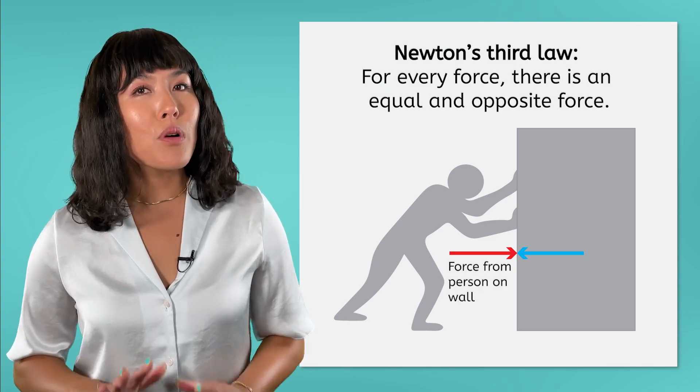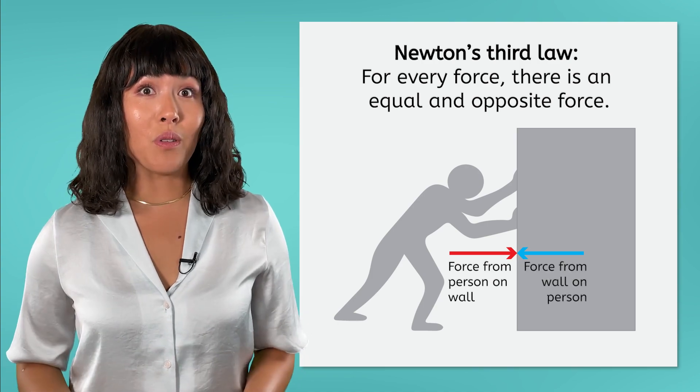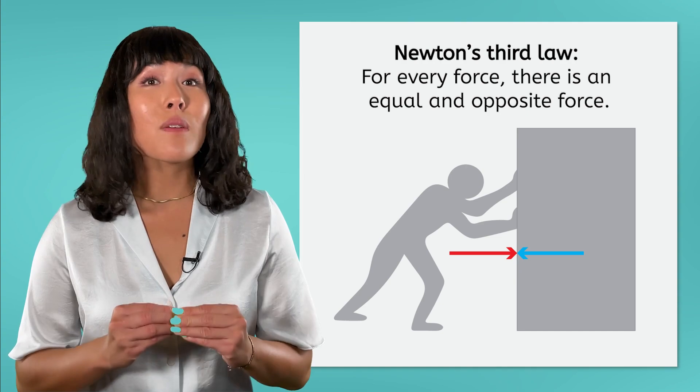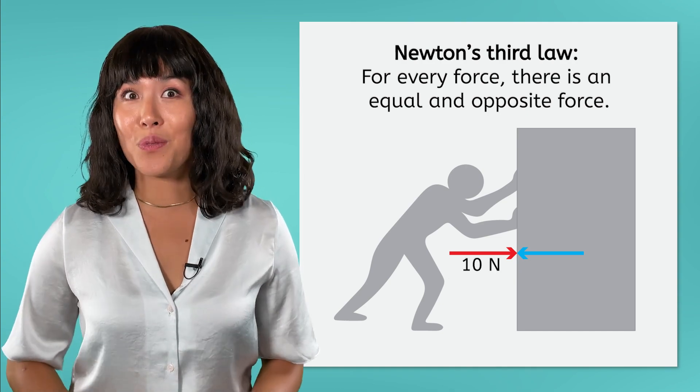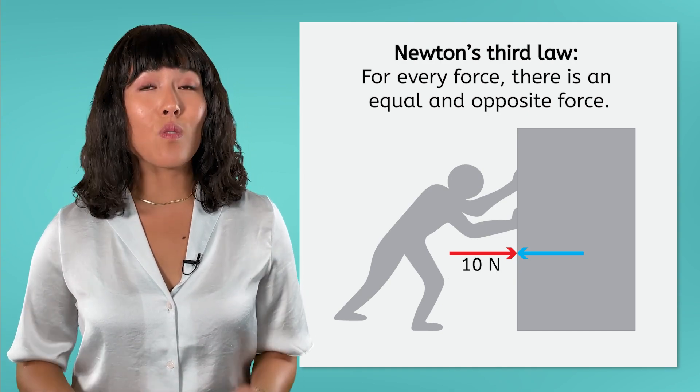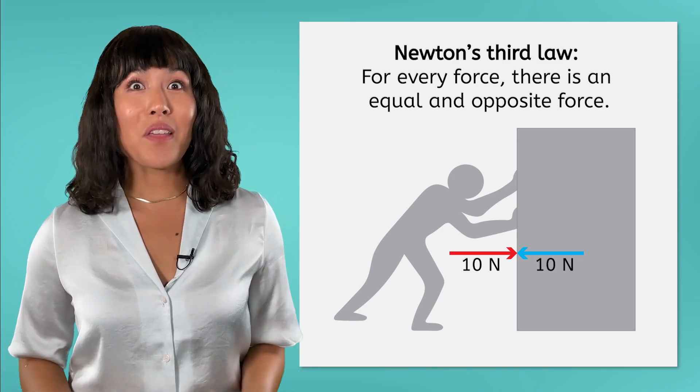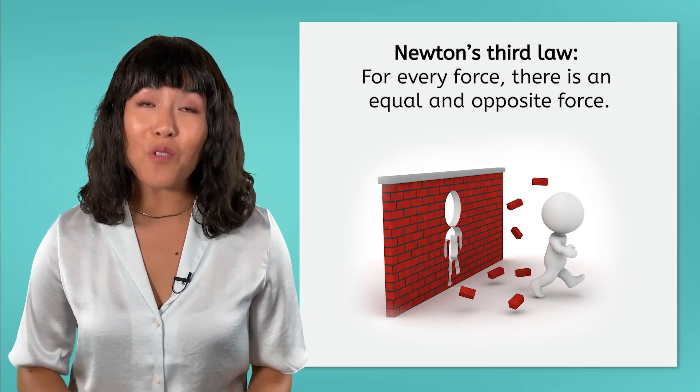In this case, a person pushes on the wall, and as a result, the wall pushes back on the person. Let's imagine that the person pushes with a force of 10 newtons. How much force does the wall have to push back with? 10 newtons! Otherwise, the person would go crashing right through the wall.